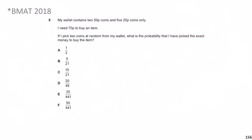This is a similar question to before: there are two events — picking the first coin and picking the second coin. On the first pick you can either get a 50p or a 20p. There are seven coins in total (two plus five), so the probability of 50p is 2/7 and the probability of 20p is 5/7.